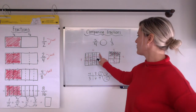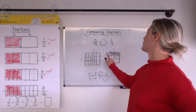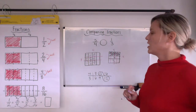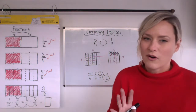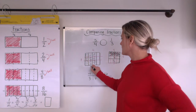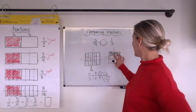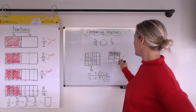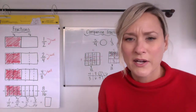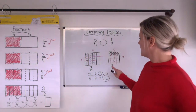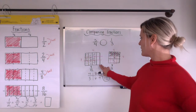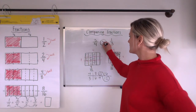One, two, three, four, five, six, seven, eight, nine, ten, eleven, twelve. One, two, three, four, five, six, seven, eight, nine, ten, eleven, twelve. Now I can see three, six, nine twelfths are shaded, and four twelfths are shaded. Now I can easily compare them because I have the same denominator. I know nine twelfths is greater than four twelfths.